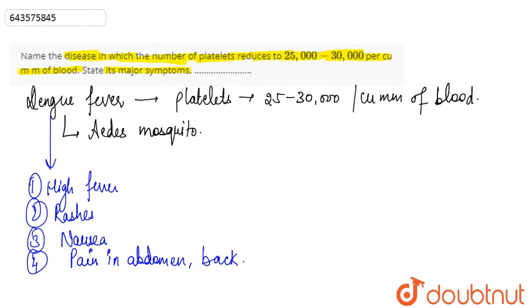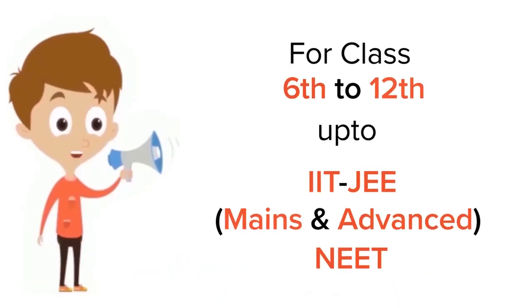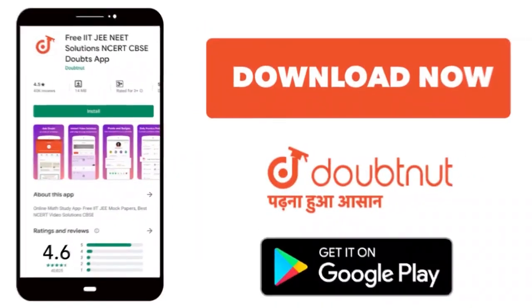So this is the answer for this question. For class 6 to 12, IIT-JEE and NEET level, trusted by more than 5 crore students. Download Doubtnut app today.